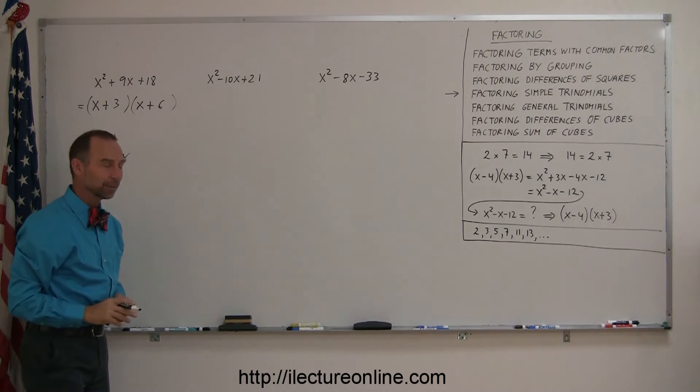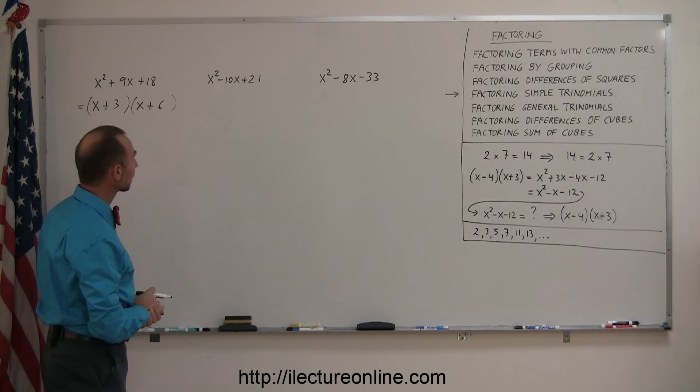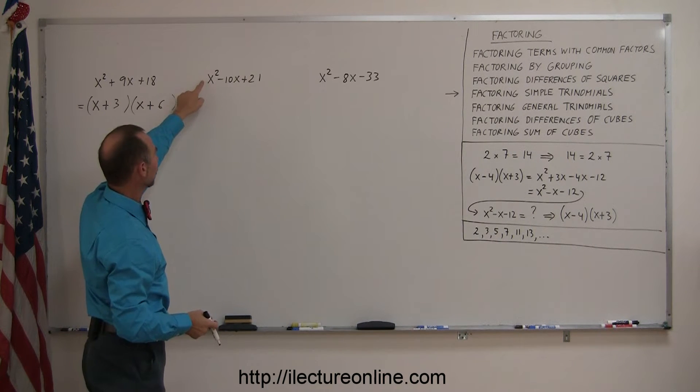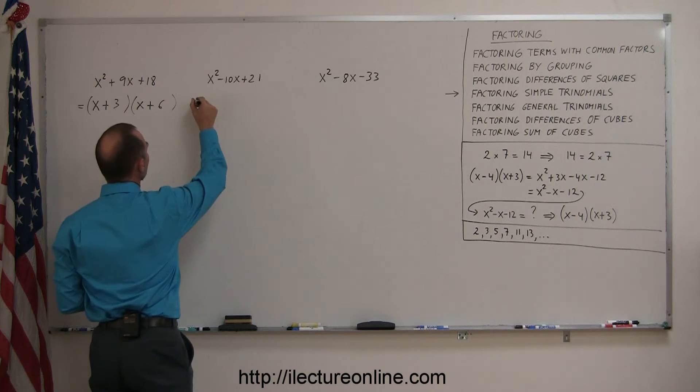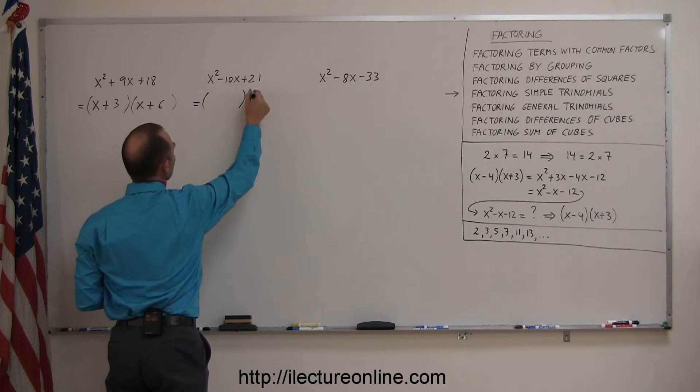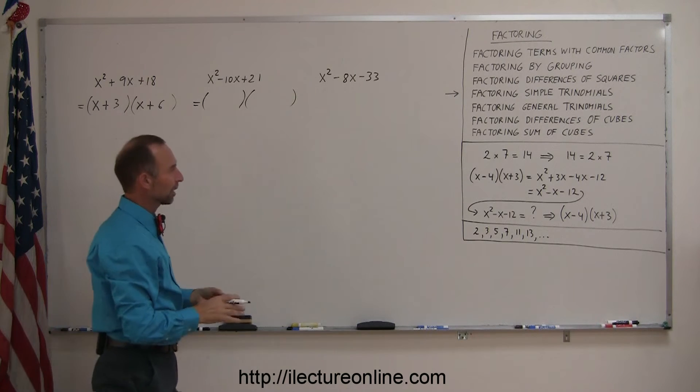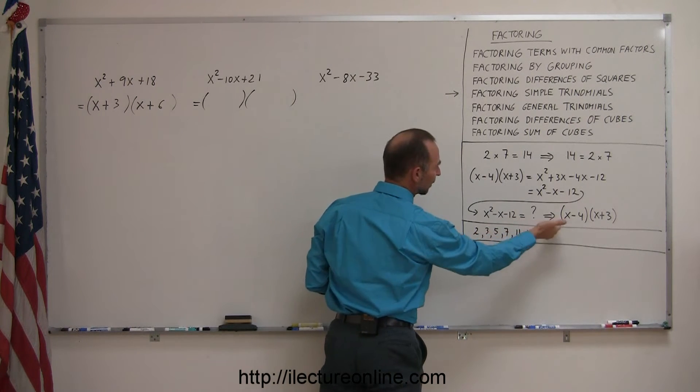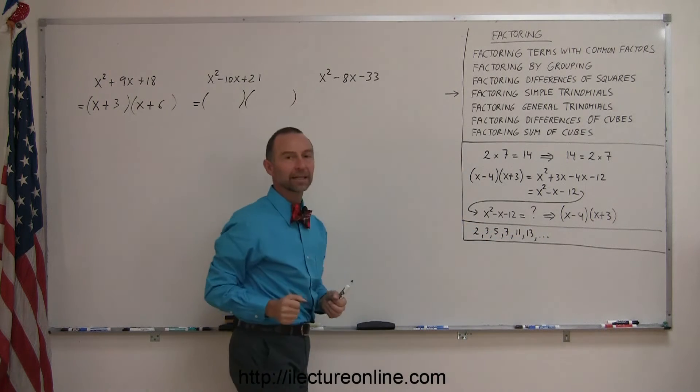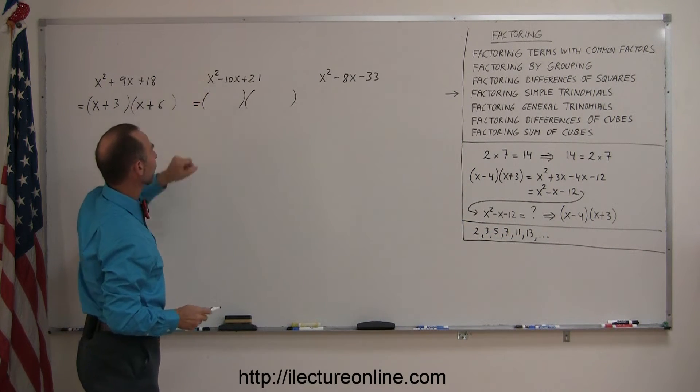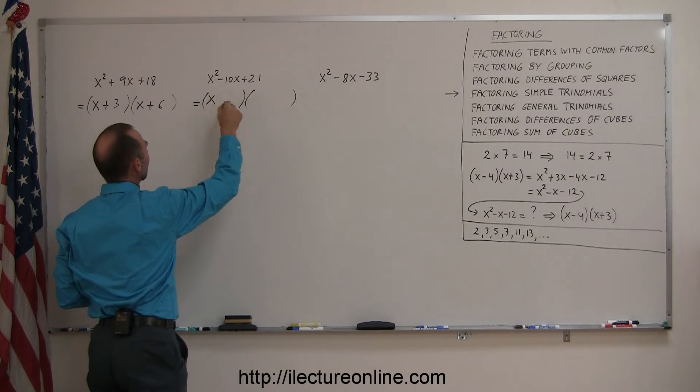There's the factored form of that trinomial that is simple in format, simple because the first term has a coefficient of 1, so I know that the factored form will look like this. It'll be the product of two binomials. Since the first term has a 1 as a coefficient, I know I have to have an x and an x here.